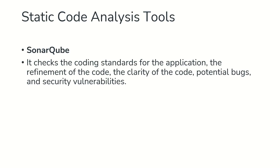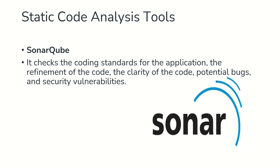The next tool is a static code analysis tool — SonarQube. SonarQube checks the coding standards for your application. If you have not followed coding standards, SonarQube will flag it. It also helps refine your code and finds potential bugs and security vulnerabilities. Make sure you have a basic understanding of how SonarQube works — it is one of the most important tools for a Java developer.